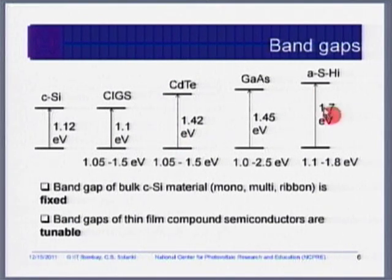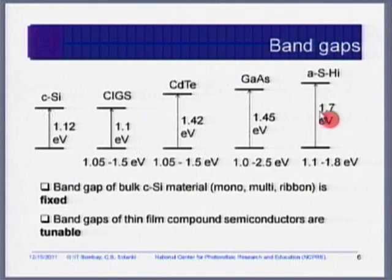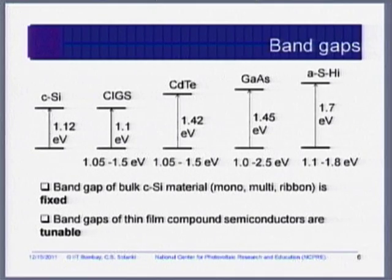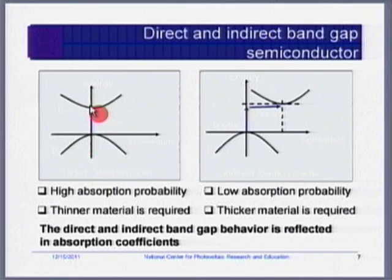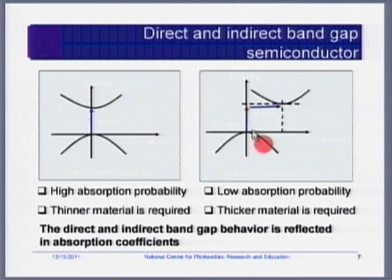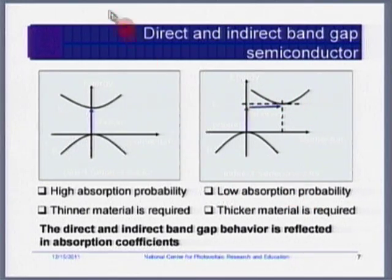For various band gap values: any photon with energy less than the band gap does not get absorbed. Amorphous silicon loses a lot of spectrum — all photons with energy less than 1.7 eV do not get absorbed. In crystalline silicon, all photons with energy less than 1.12 eV do not get absorbed, and this is already a significant loss. Absorption coefficient is high for direct band gap semiconductors like in thin films, where no change in momentum is required.